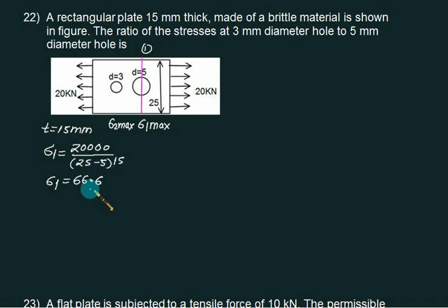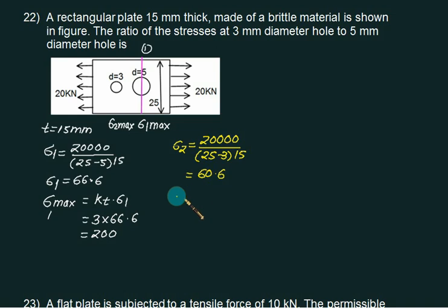So this is sigma 1. So what is the sigma max at section 1? Is it KT? KT multiplied by sigma 1. Here the KT is always fixed for circular hole. So is it 3 times. 66.6 is very close to 200. Now same procedure I will repeat for this section. So what is sigma 2 first? Is this force that is 20,000 divided by, now what is this 25 minus 3. So this is 60.6. Can we calculate sigma 2 max? So sigma 2 max is only 3 times of this. KT is fixed. 180.8.